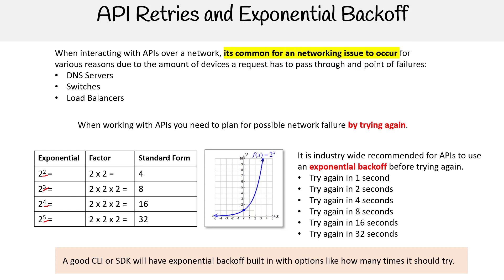Good CLIs and SDKs already have this built in, so quite often you don't have to do anything but use the CLI or SDK. But if you are not using them and you're directly interacting with the API via HTTP requests, you'll have to code this in yourself. Often the CLIs or SDKs will also allow you to change the strategy for exponential backoff, such as changing the initial backoff value.